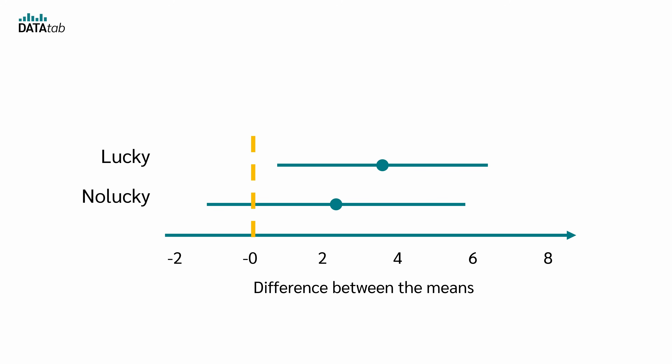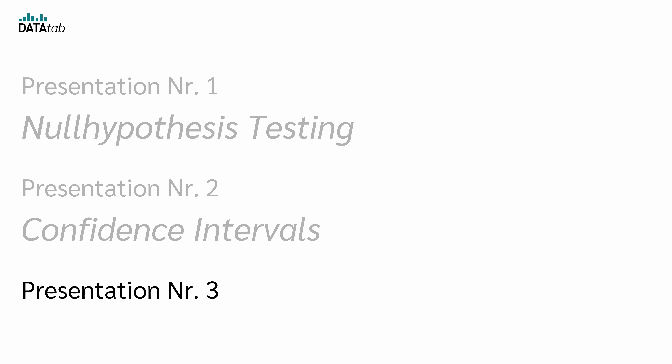This leads us to a second interpretation: one result is statistically significant and the other is not, but both point in the same direction. Additional research is necessary. And finally, the last way to present the results: meta-analysis.